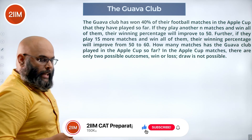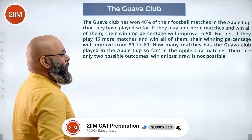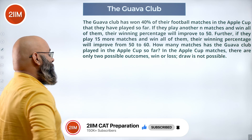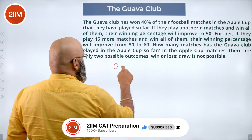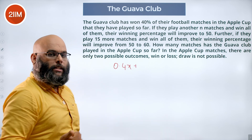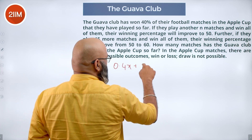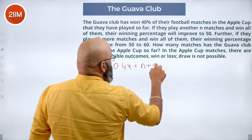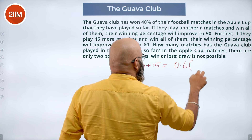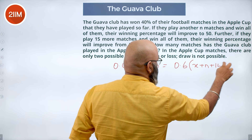Now let's take the second case. It says further, if they play 15 more matches and win all of them, their winning percentage will improve from 50 to 60. So they have already won 40 percent of x. They play n matches and another 15 matches and win all of them — n plus 15. They have an overall winning percentage of 60, so that is 0.6 into x plus n plus 15.